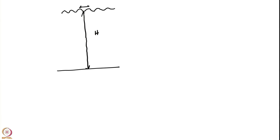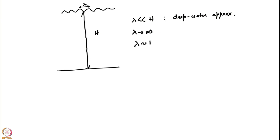As I make λ bigger and bigger, the deep water approximation fails. As λ becomes of the same size as h, the wave starts feeling the presence of a bottom wall. In particular, when λ becomes much greater than h, we have the reverse limit called the shallow water approximation.